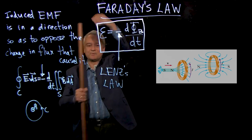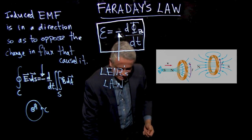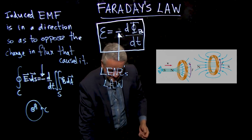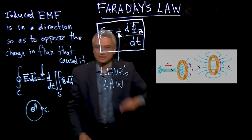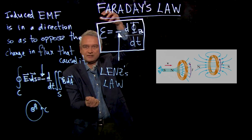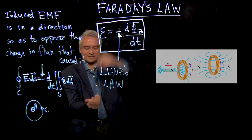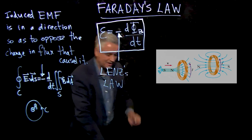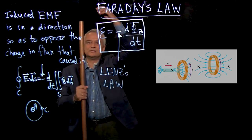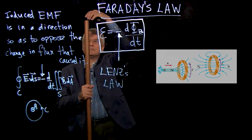First of all, let's just remember how magnets fall when there's no copper pipe. So here's this magnet — I'm going to drop it. That's the acceleration due to gravity on the magnet. But now let's do it in the copper pipe.